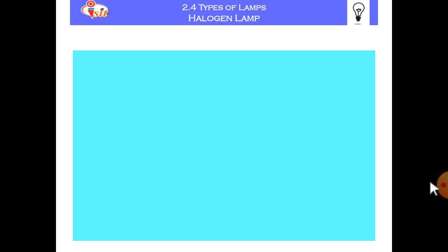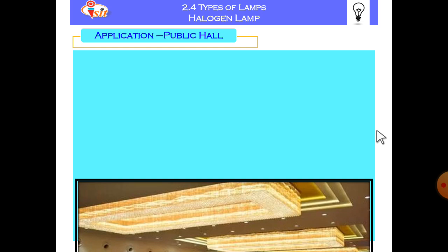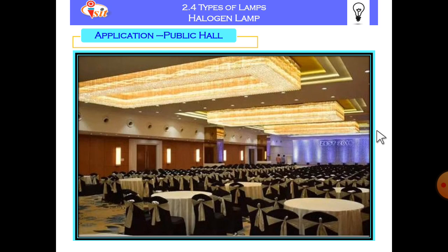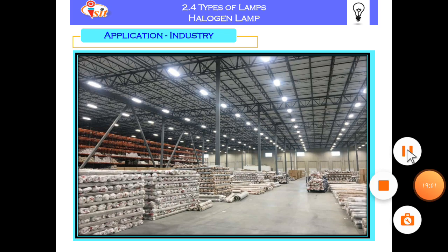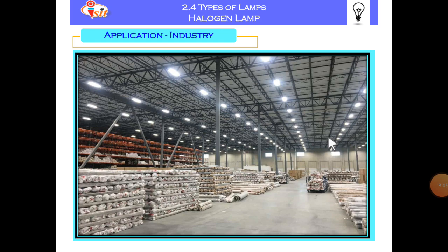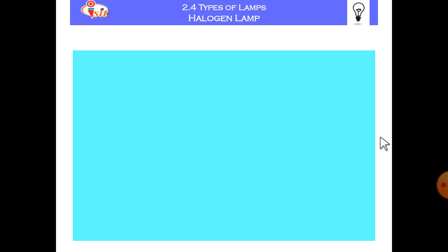Now the applications. This is what the public hall lights look like when illuminated by the halogen lamp. Next application is industry. So this is the industry look-alike when it is illuminated by the series of halogens over the top of roofs.